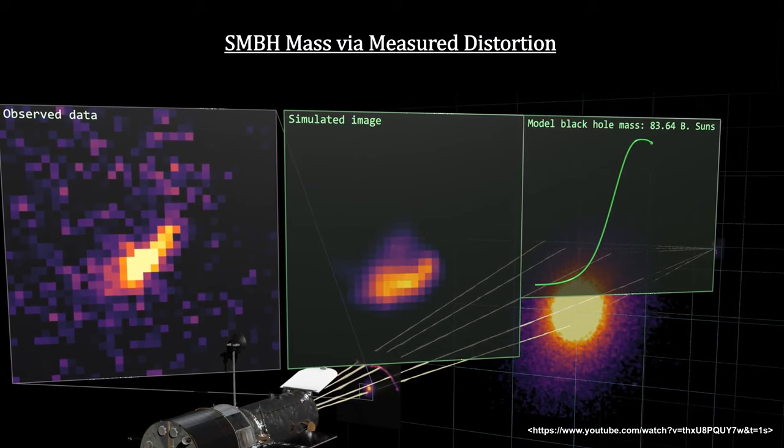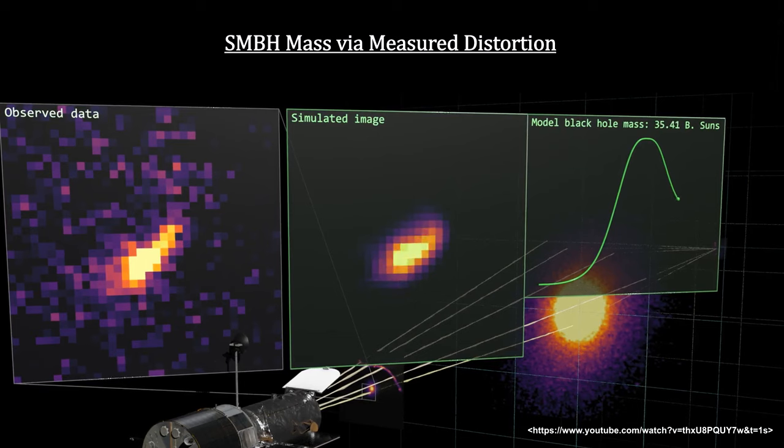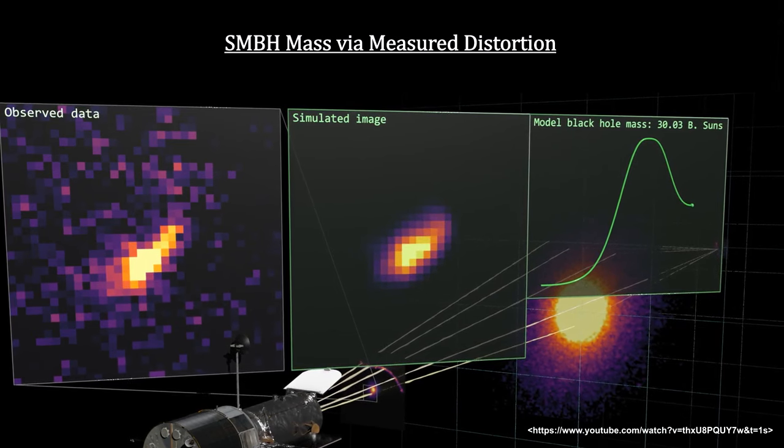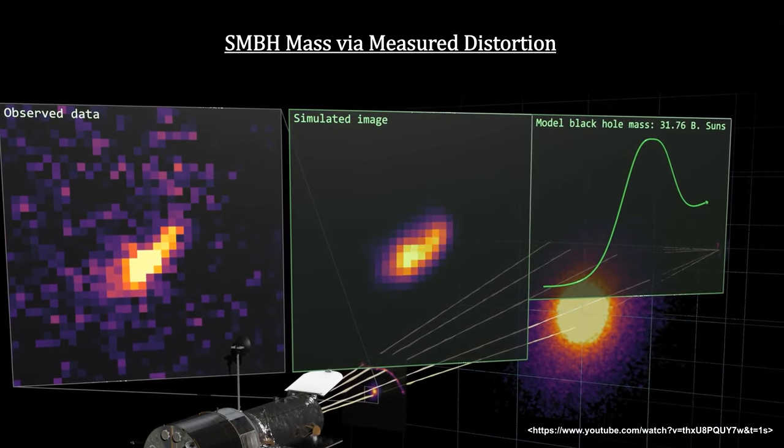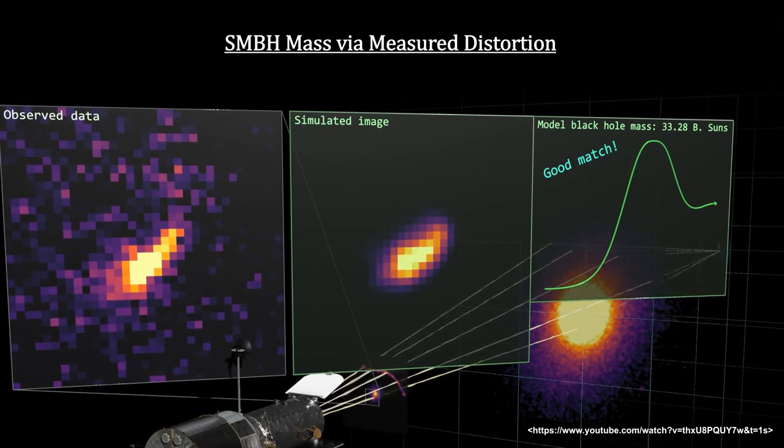Masses too low or too high would not create the image observed, but the correct mass would. The best fit came when a mass of 33 billion suns was input. This mass makes it one of the most massive black holes ever detected.